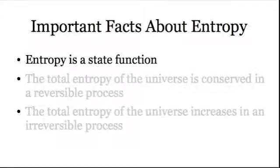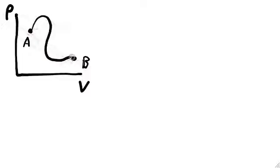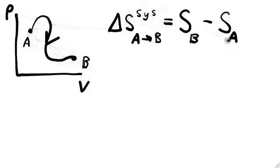Now we're ready to talk about entropy. The first and most important fact about entropy is that it is a state function. That means that if I transition from a state A to a state B, the change in entropy of my system is equal to the entropy at B minus the entropy at A, independent of path.